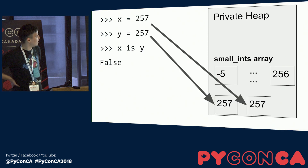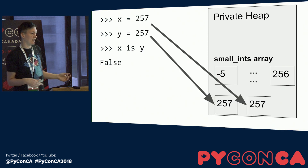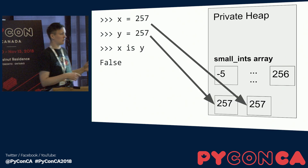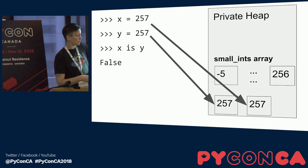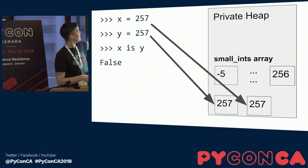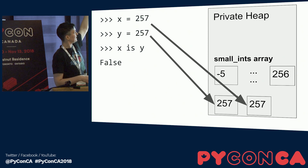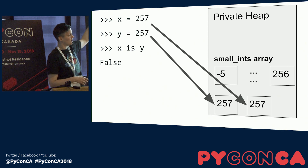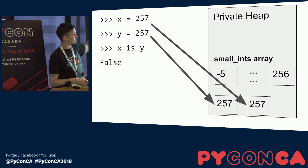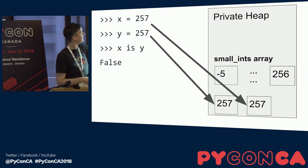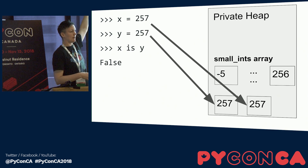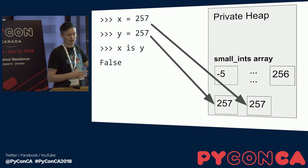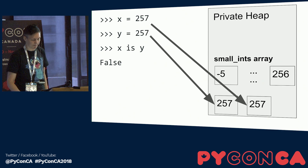Now we look at 257, because 257 is not in that small int array range. When Python initializes these variables, it creates two new PyLong objects and puts them on the heap. So when we compare x and y, they're different objects, and we get false.